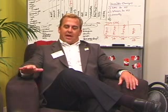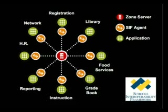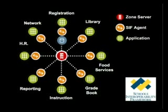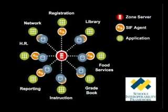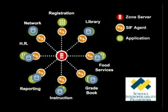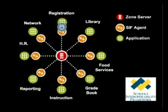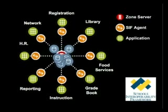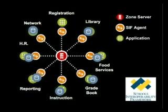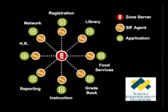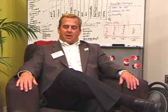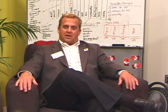The way it works is an application has an agent that's built, and the agent adheres to the SIF specification and the XML code. That information then moves through a zone integration server — which is just a server, what we call the traffic cop of information. It doesn't store the data; it basically just moves it and publishes that to whoever subscribes, either automatically on an event-based basis or in a more batch-oriented publish-subscribe model, depending on what mechanism they want to set up.